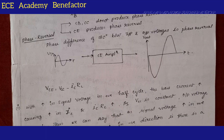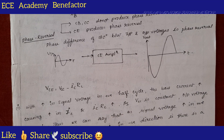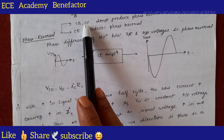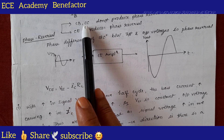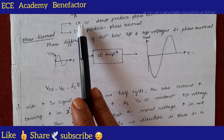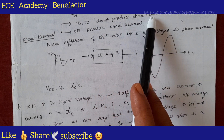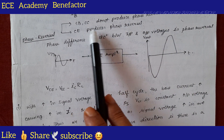Hello dear students, welcome to ECE Academy. In this class we will be seeing phase reversal. This process occurs in CE amplifier. In our previous class we have seen the circuit diagram of CE amplifier. The transistor is connected in three configurations: CE amplifier, CB amplifier, and CC amplifier — common emitter, common base, common collector configuration. In common base and common collector configuration there is no phase reversal, whereas in CE amplifier phase reversal takes place.